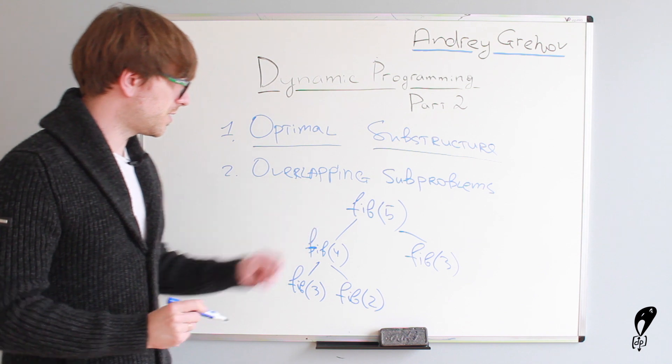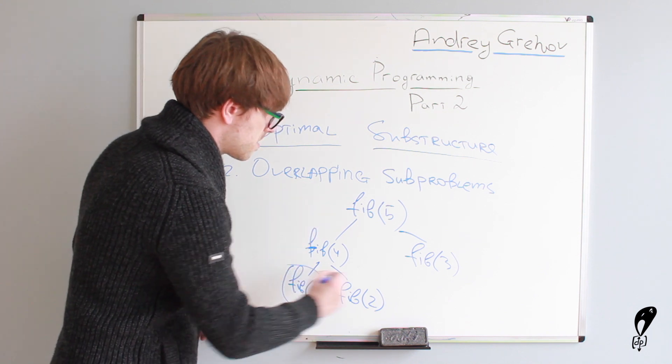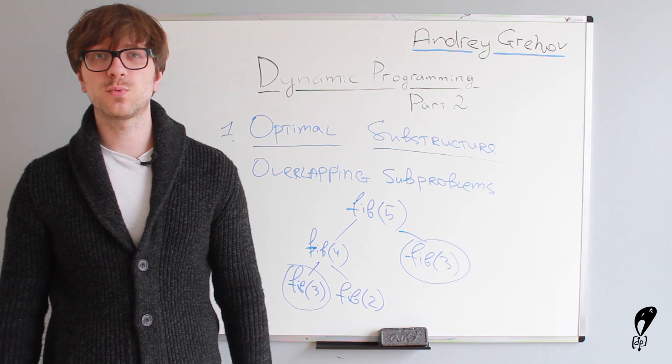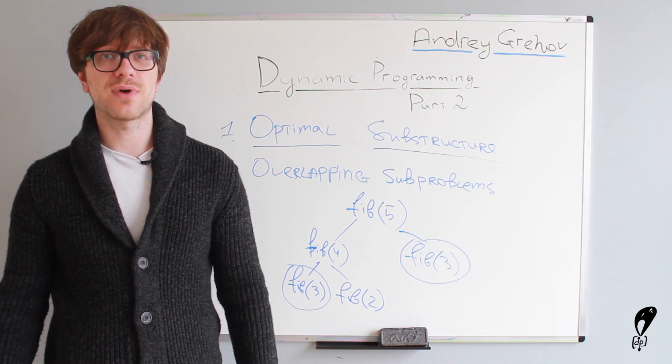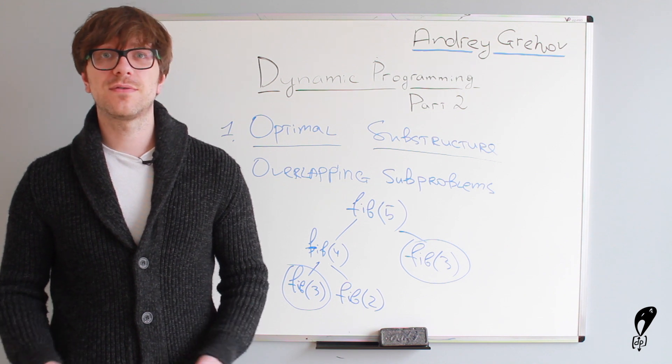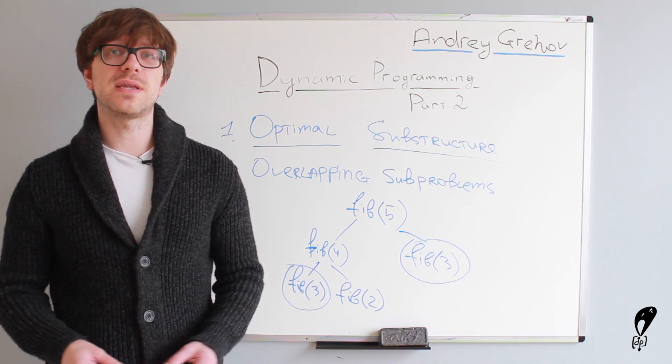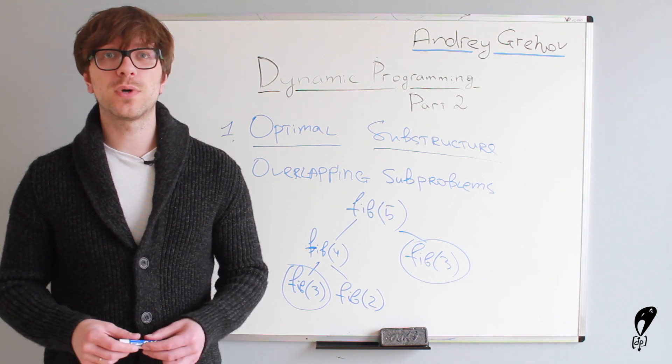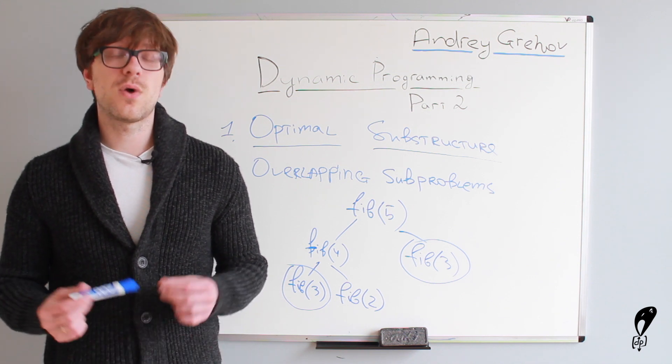right? So, as you can see over here, we recalculate 3 two times. When that happens, we say a problem has overlapping sub-problems property and such problem is a candidate for dynamic programming. In the next video, we will go over a very basic problem and we'll illustrate this property one more time.